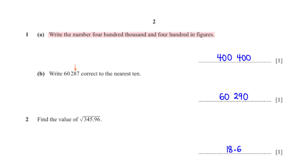Write the number four hundred thousand and four hundred in figures. This is the number in figures. To confirm this, you can type four hundred thousand plus four hundred into your calculator.